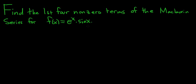Hey, what's up YouTube? In this video, we're going to find the first four non-zero terms of the Maclaurin series for the function e to the x times the sine of x. So we're just going to write down the Maclaurin series for e to the x and sine x and multiply them. Let's go ahead and do that.